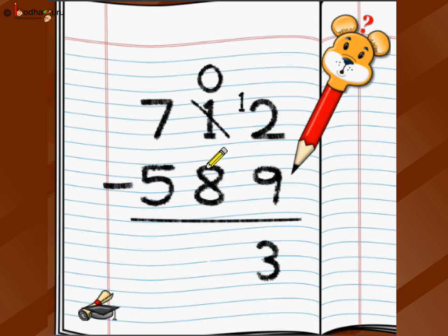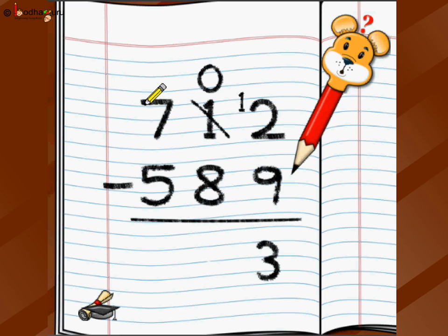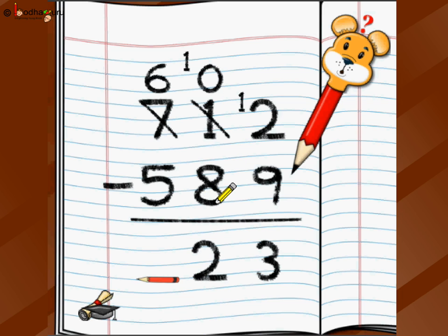Move to the tens position. The 1 is crossed out — it's now 0. Can we subtract 8 from 0? No. So 0 borrows from its neighbor 7: 7 becomes 6, and 0 becomes 10. Now 10 minus 8 is 2. Move to the hundreds — don't look at the crossed-out 7; use 6. So 6 minus 5 is 1. The answer to 712 minus 589 is 123.